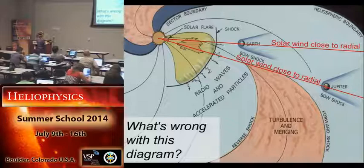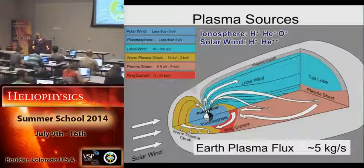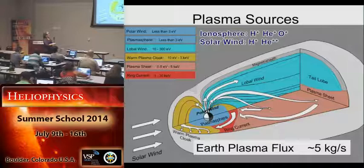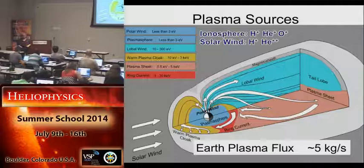So let's talk about plasma sources. For the Earth things are actually fairly complicated — we have an ionospheric source and a bit of a solar wind source. Protons are protons are protons, so it's hard to distinguish, but helium is easier because solar wind are doubly-ionized alpha particles while internal sources are singly ionized. Singly ionized oxygen comes from the atmosphere. The total plasma from the planet is about five kilograms per second, so the Earth is very much dominated by the magnetic field rather than the plasma source being an important factor.